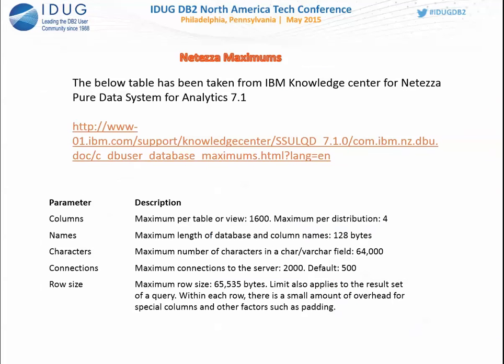Netezza has specific maximums and limits from the IBM Knowledge Center. You can have a maximum of 1,600 columns per table — hitting that limit in real-world scenarios would be very bad design. The maximum row size is 65 KB, which is quite limited compared to DB2. This is intentional — no large object support means the max row is just 65 KB.